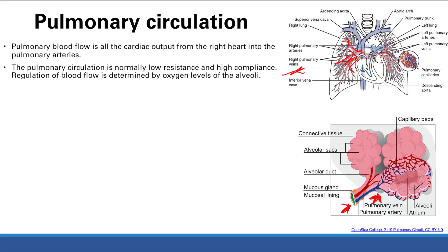We still need to regulate blood flow, and the key determinant here is the oxygen levels of the alveoli. For example, if a particular alveolus has low oxygen, what happens to the blood vessels — do they dilate or vasoconstrict? Low oxygen in that alveolus is going to cause vasoconstriction.